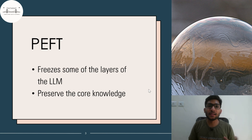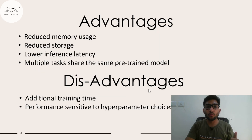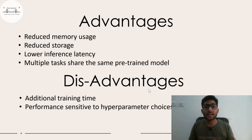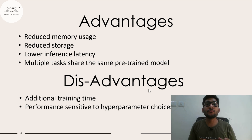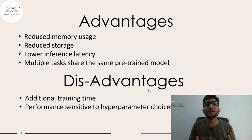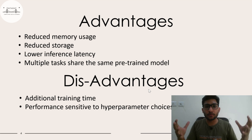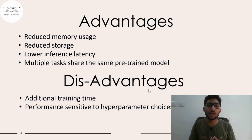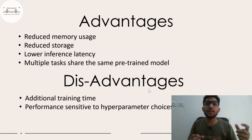This is the underlying principle of PEFT. PEFT has some advantages which include reduced memory usage, reduced storage, and lower inference latency. One of the key advantages is you can use the same pre-trained architecture or the same pre-trained model for multiple tasks. It just shares the underlying pre-trained weights and trains only the top layers or a few layers which can be varied based on the task.